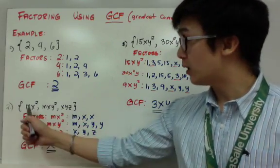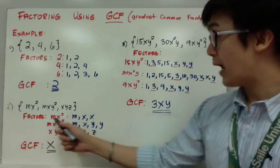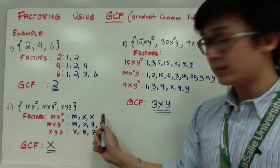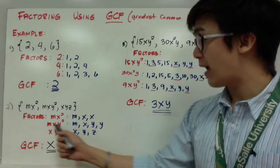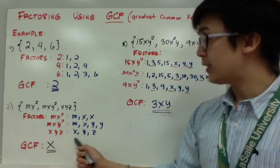If I expand these variables or these terms, for mx squared I have m and 2x's. For mxy squared, I have 1m, 1x, and 2y's. And for xyz, I have xyz.